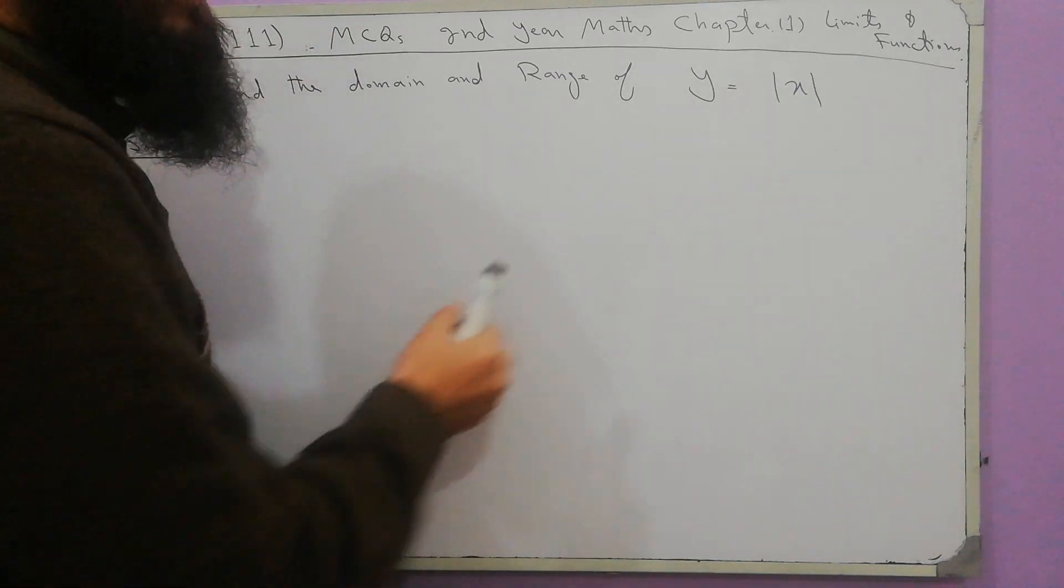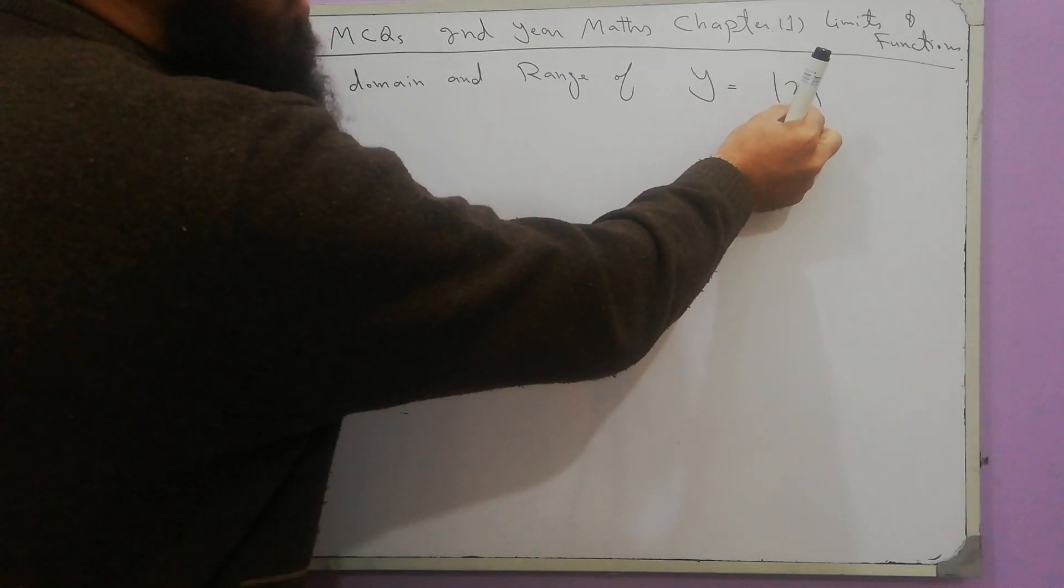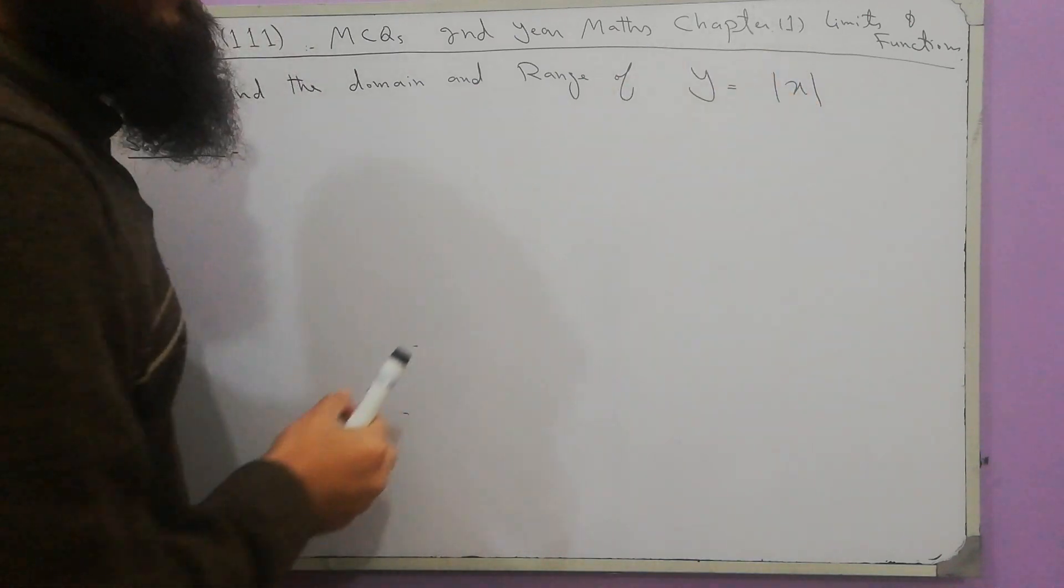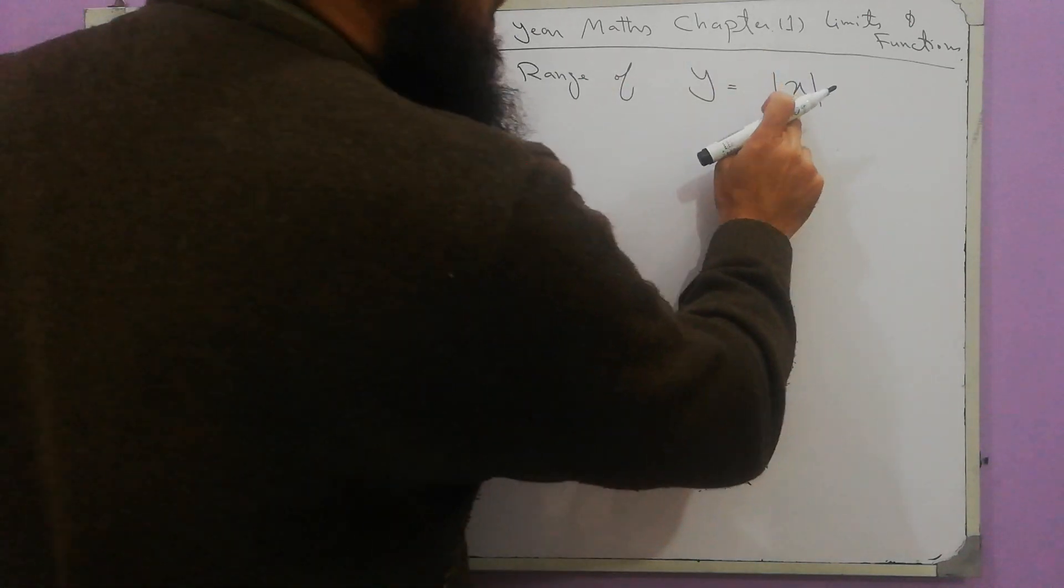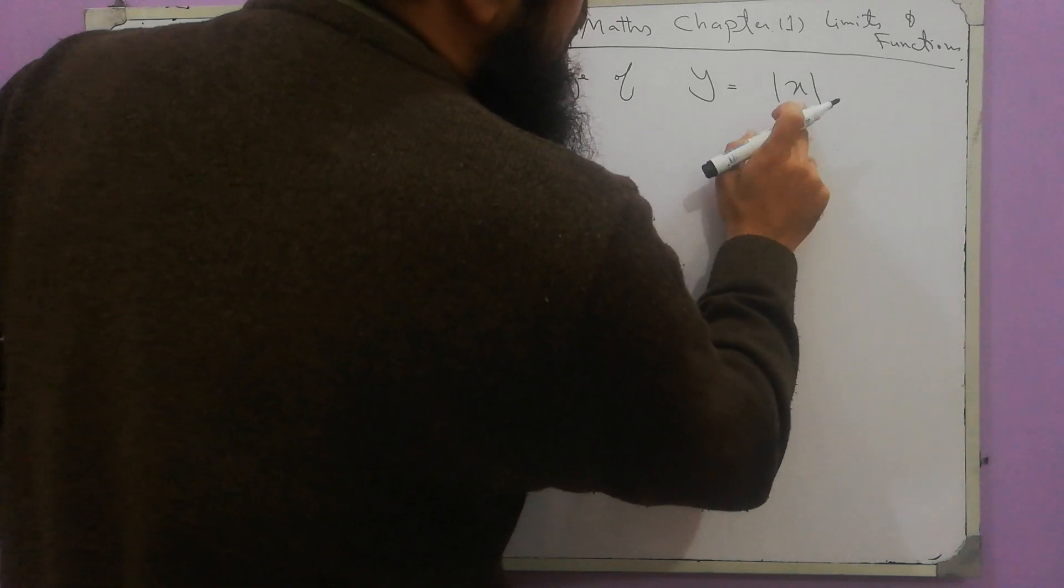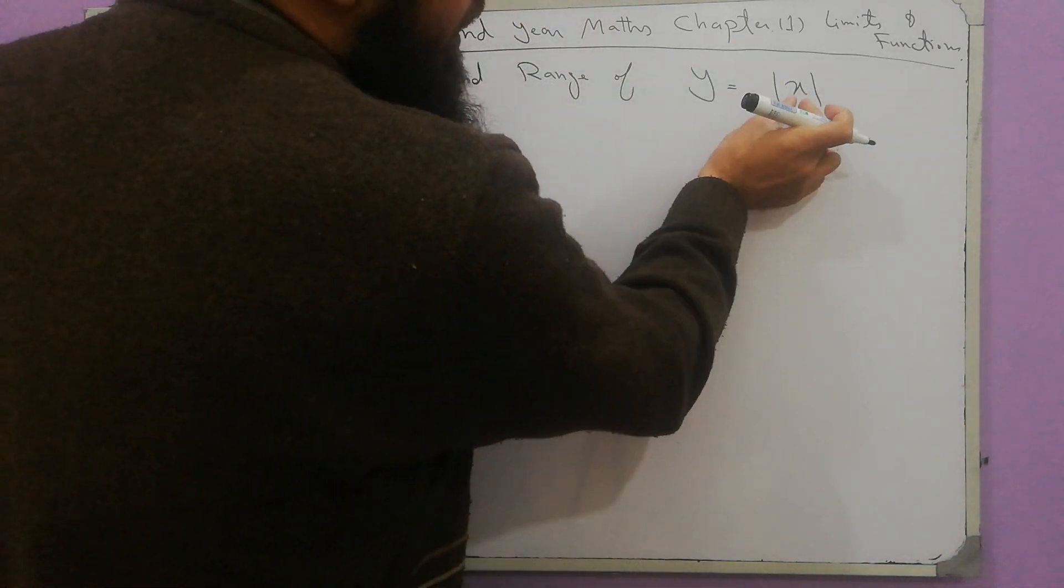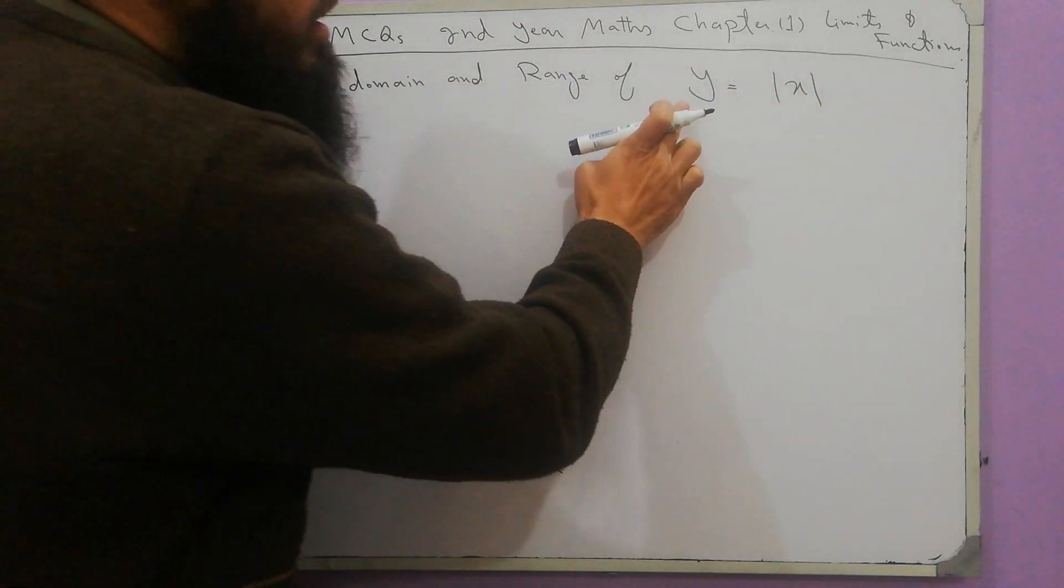Modulus of x, the value of modulus of x will be positive always. If we put, first I discuss domain. Domain is the input and range is the output.